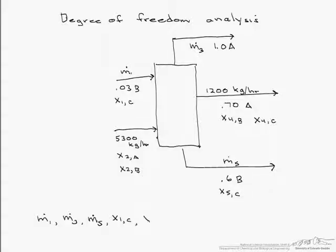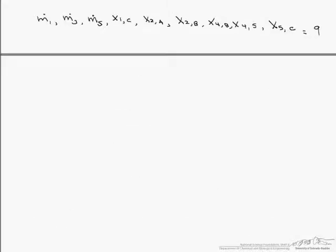If we look at the mass fractions we have x1c, we have x2a, we have x2b, x4b, x4c, and x5c. So when we count them up we find that we have 9 unknowns. So let's see how many independent species balances we can make.